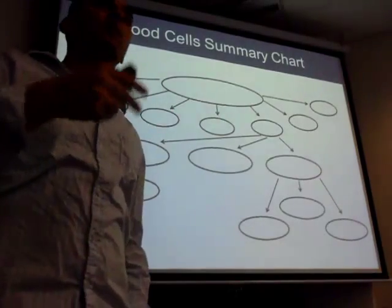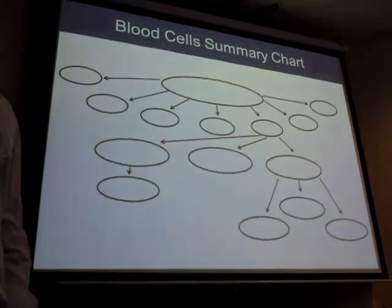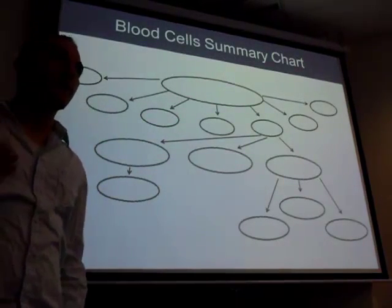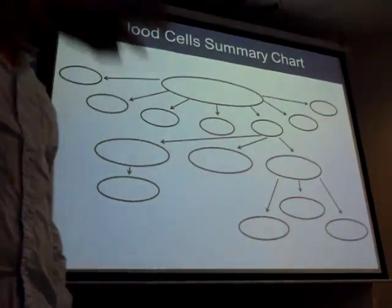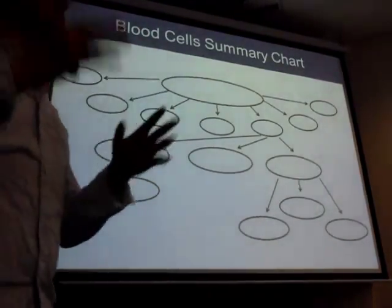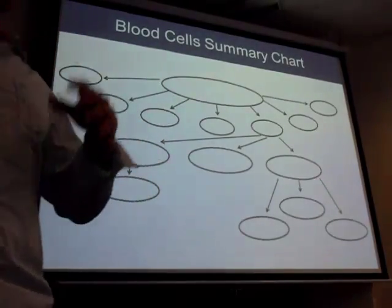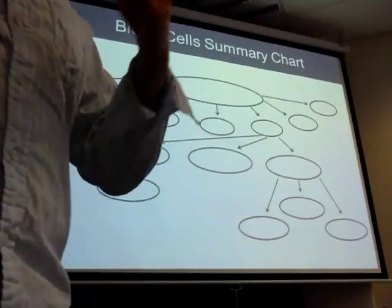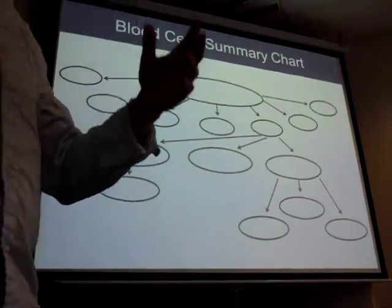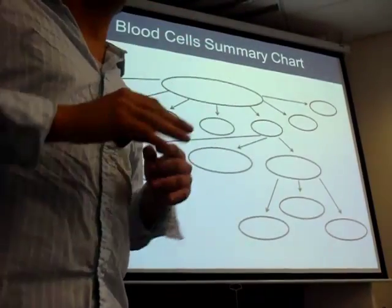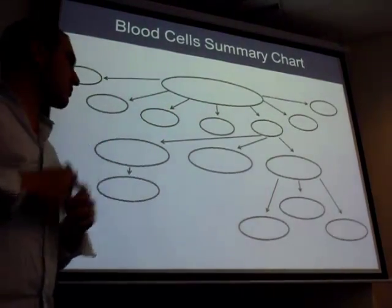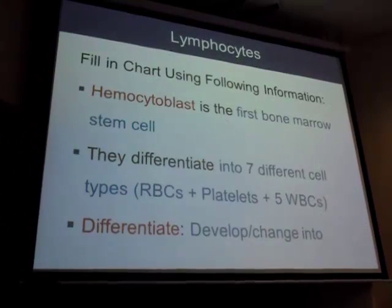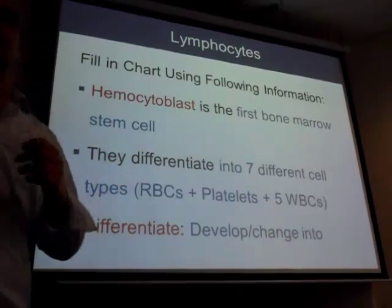Helper T cells help coordinate the immune response. Cytotoxic T cells kill infected cells. Suppressor T cells inhibit and slow down the immune response — you want to fight infection, but at some point you need to stop the attack. Suppressors give the signal to stop, like ending a battle once the main infection is destroyed.